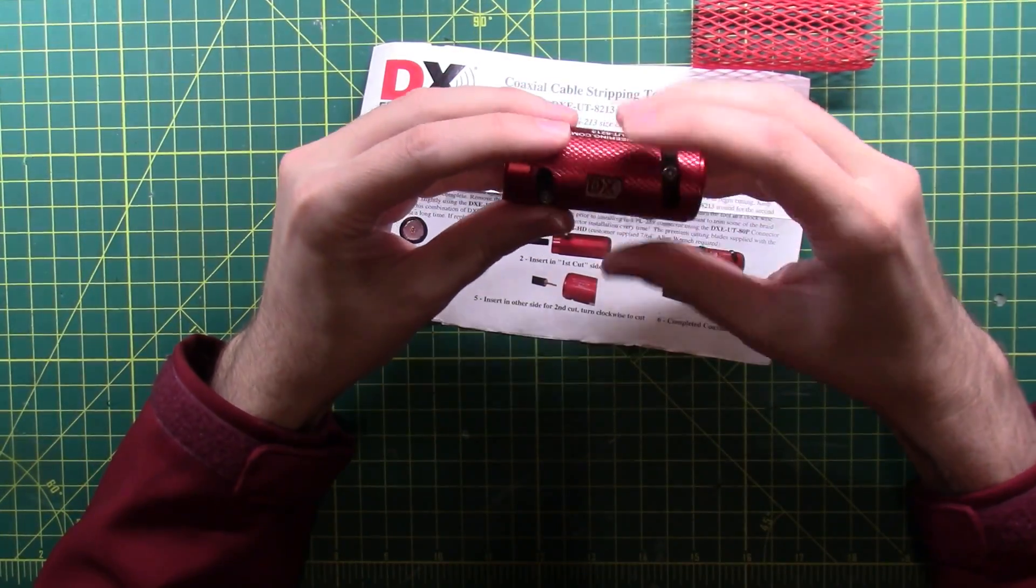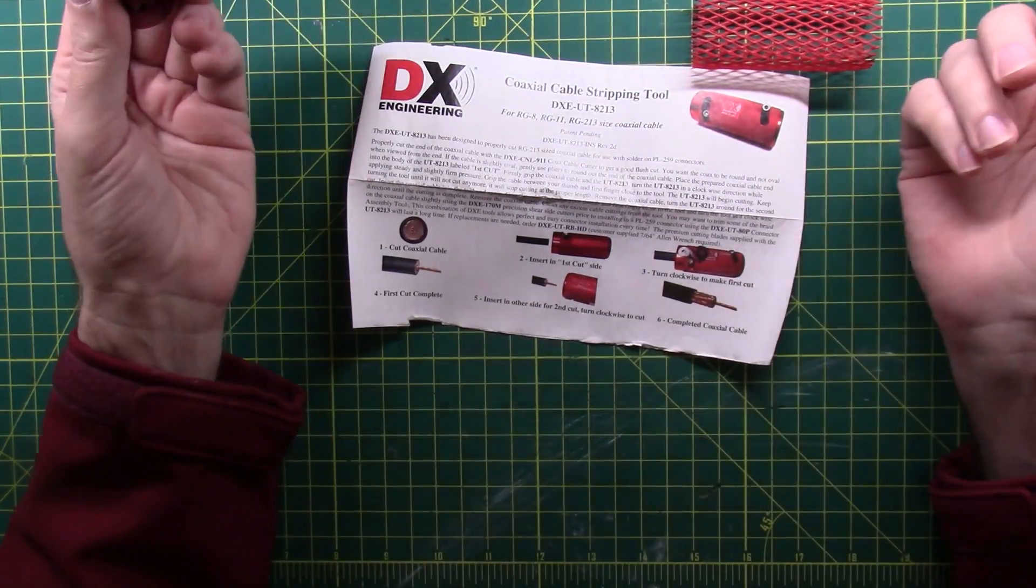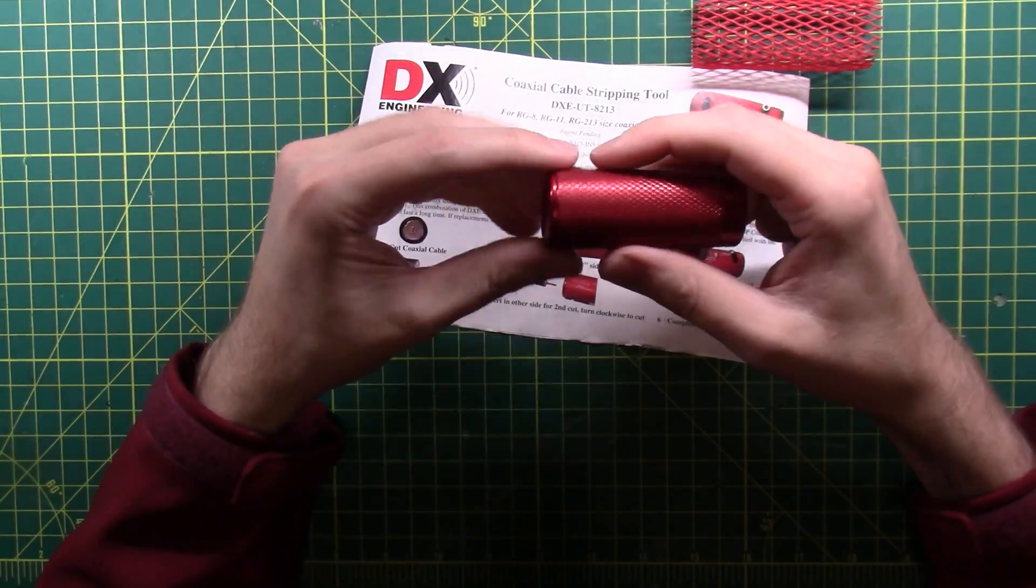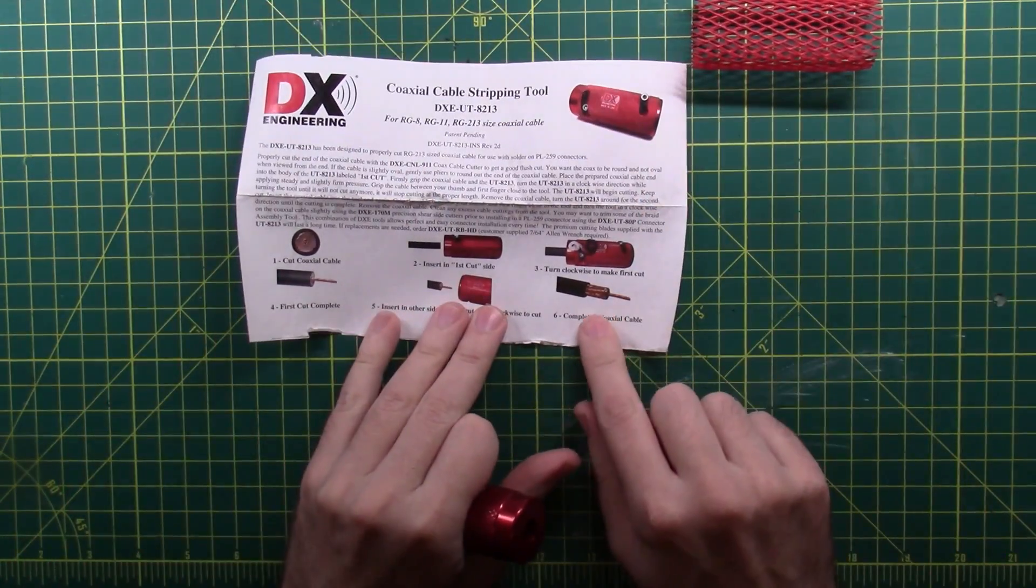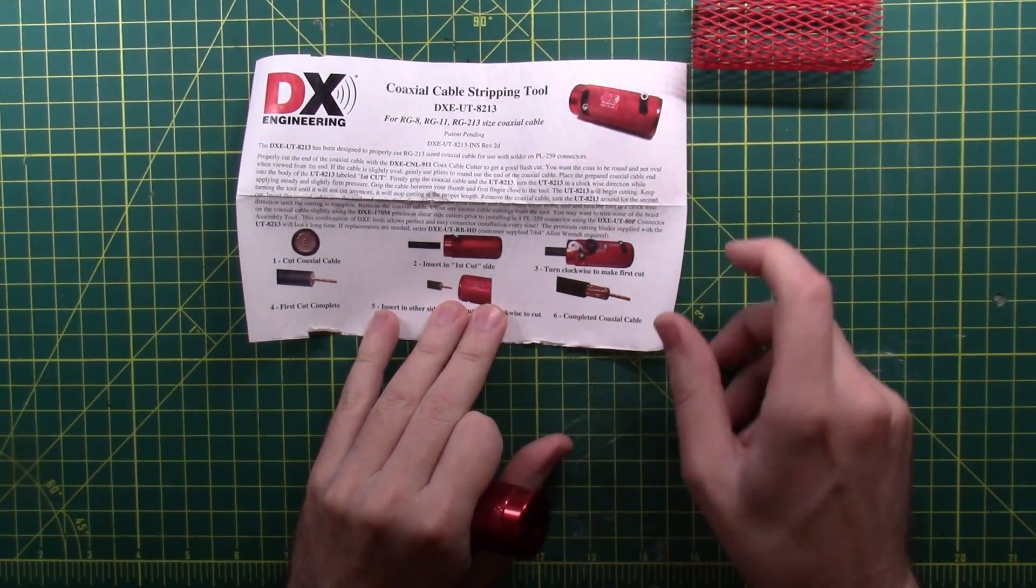Turn it clockwise to make the first cut. First cut's complete. Flip it over, stick it back in, turn it again, and you should wind up with a beautiful cable just like that.